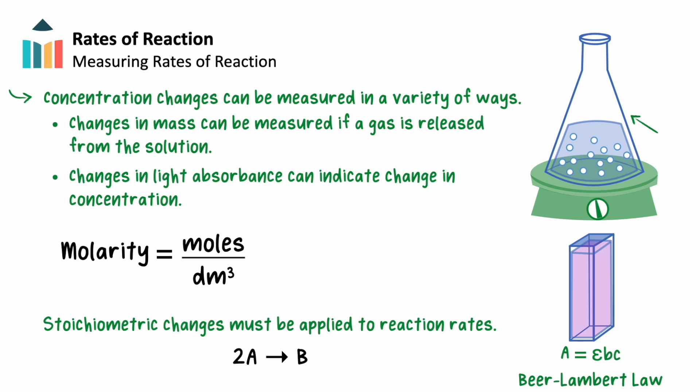If one of the compounds in the reaction is colored or UV-absorbing, the absorbance can be measured using a UV-vis spectrometer or colorimeter. The change in absorbance is proportional to the change in concentration, which we could see with the Beer-Lambert law.